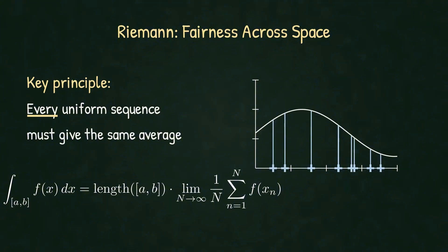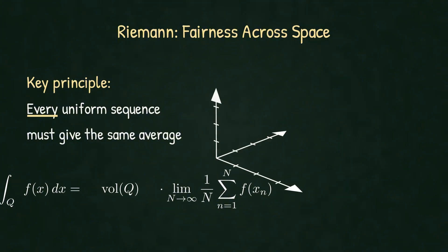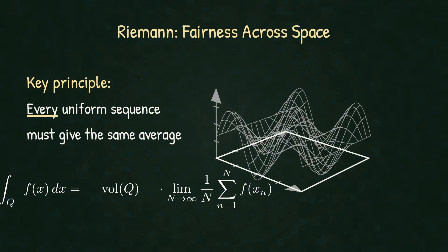Now extend this to d dimensions. Instead of length, we use volume of Q. Instead of an interval, we use a uniform sequence at any hyperbox Q. The principle remains the same. Fairness across space means every uniform sequence gives the same answer.